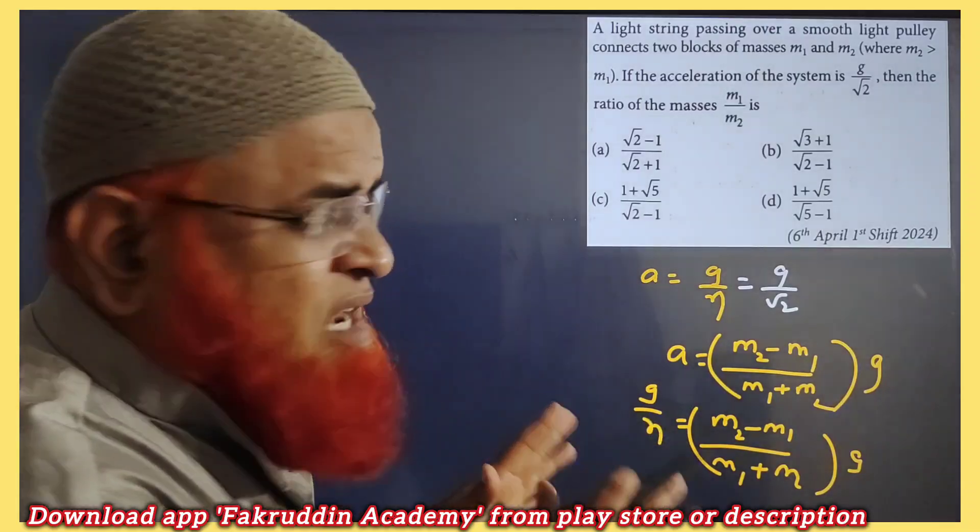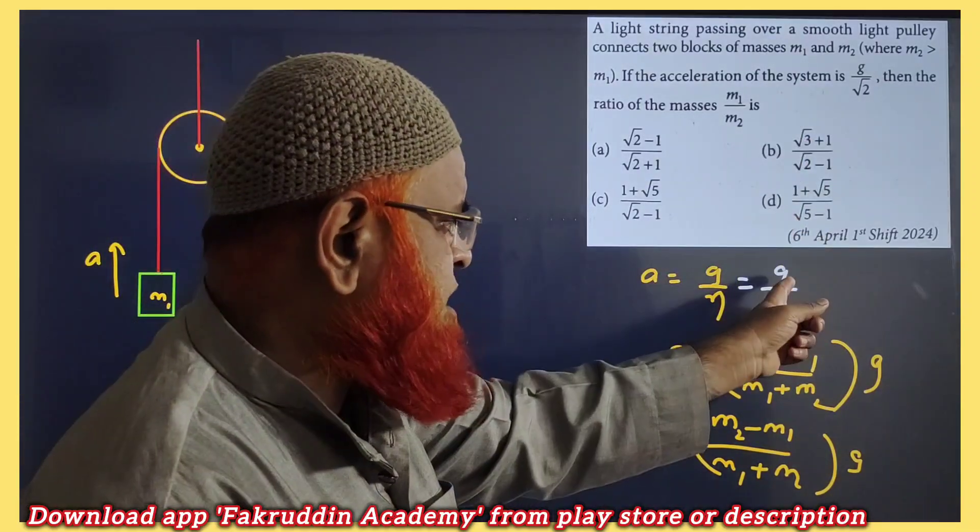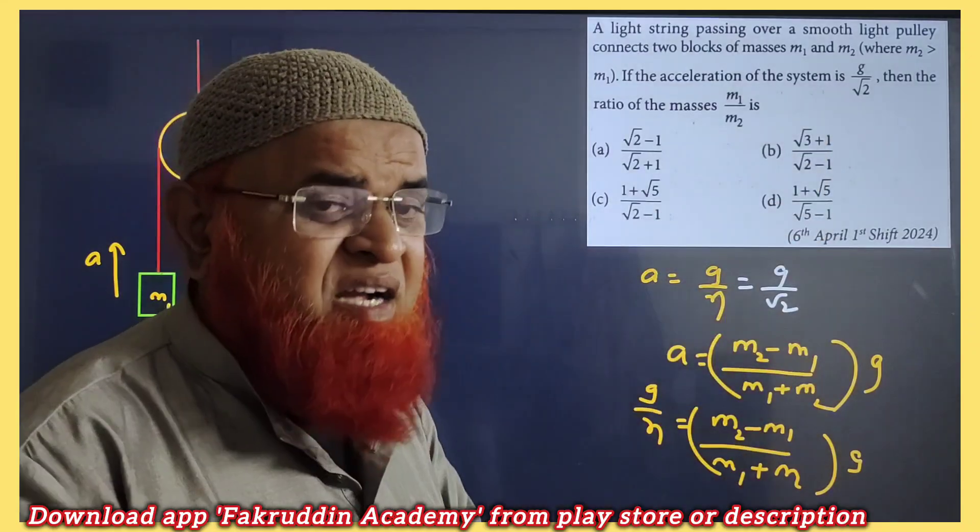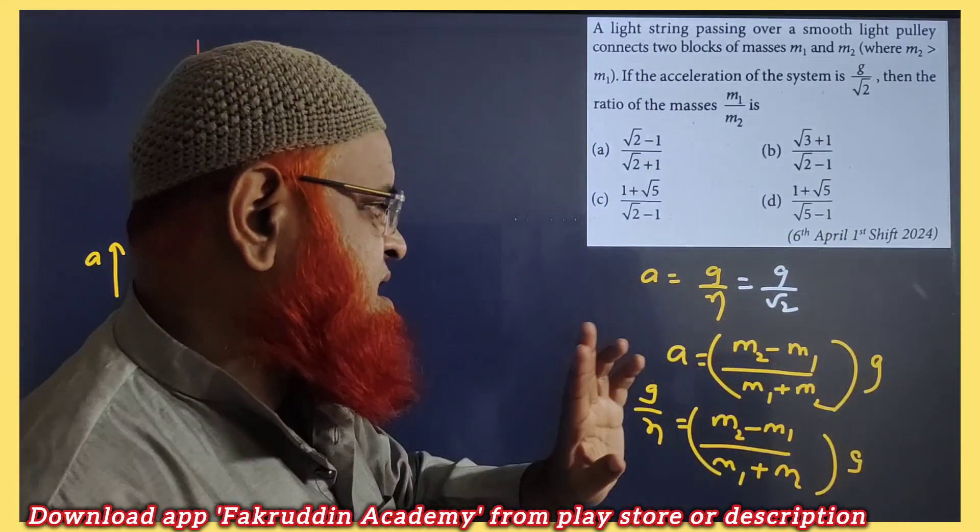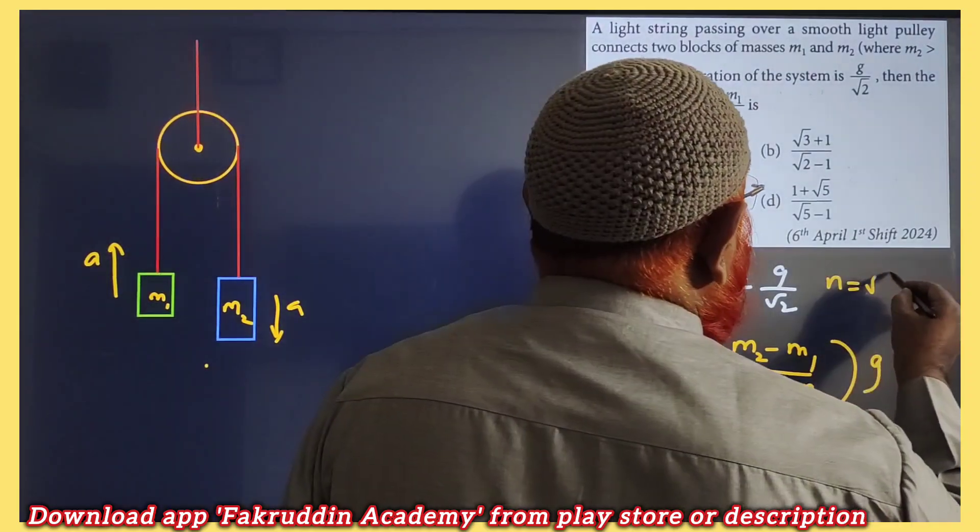It's a simple short trick, let me create it for you. So you know that acceleration is given as g by root 2. Instead of g by root 2, I take a general formula g by n. That means n is equal to root 2. That is the meaning here. n is going to be equal to root 2.